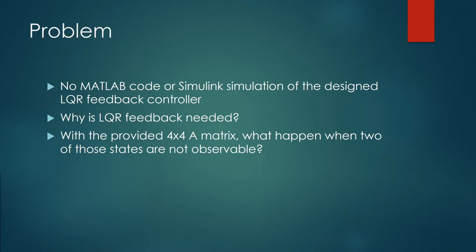Now we want to address the problem that will be the main focus of this project. We currently don't have a MATLAB and Simulink model of the drone project. We are given the state-space equation and the result showing how the drone could apply a maximum force of 15 Newtons perpendicular to the wall using LQR feedback. LQR feedback is needed because, as we will see when we check the eigenvalues, there are four repeated roots that lead to an unstable response. With the provided 4x4 A matrix, we will see what happens when two of those states are not observable.